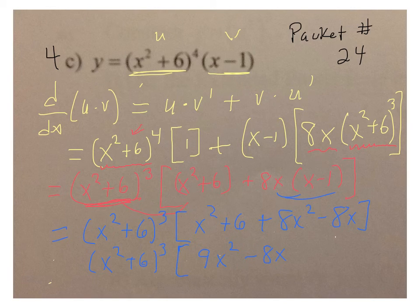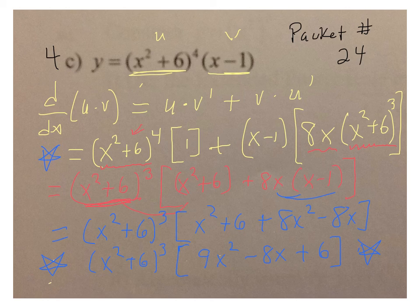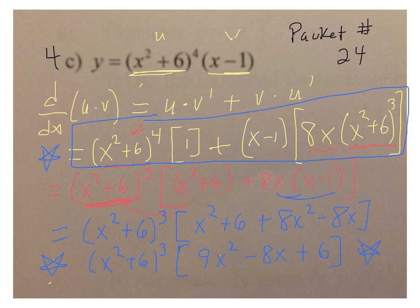Minus 8x plus 6. Now, even though those two terms set equal to 0 would not necessarily be the easiest thing to find the roots of, having the derivative in this form definitely is easier to find the roots of it than when it's in this form. Again, the answer here, at this stage of the game, is an acceptable answer. Thank you.